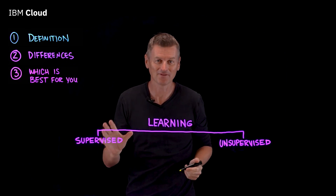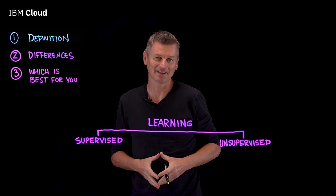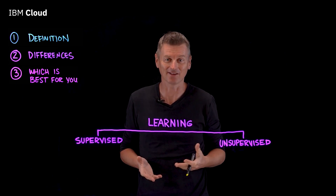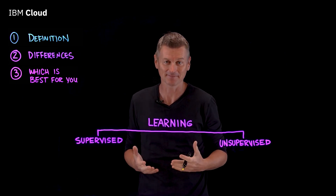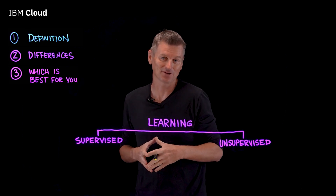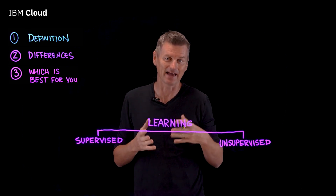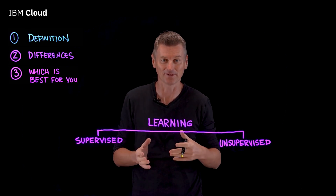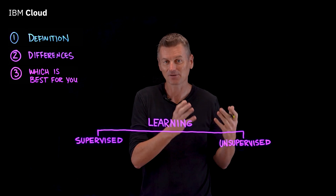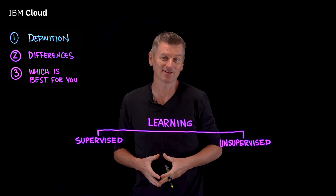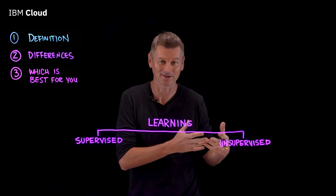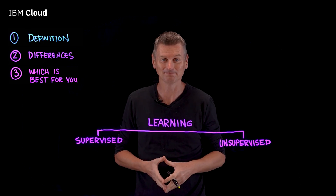In supervised learning, the machine learning algorithm is trained on a labeled data set. This means that each example in the training data set, the algorithm knows what the correct output is. The algorithm uses this knowledge to try to generalize to new examples that it's never seen before.